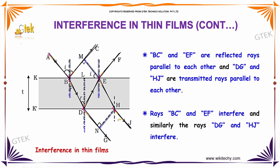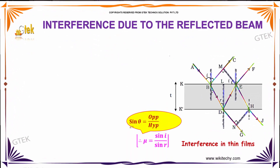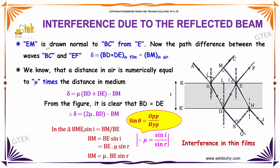The rays BC and EF interfere, and similarly the rays DG and HJ interfere. EM is drawn normal to BC, at 90 degrees from E. The path difference between the waves BC and EF is given by delta equal to BD plus DE in the film minus BM in air.